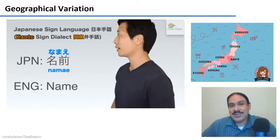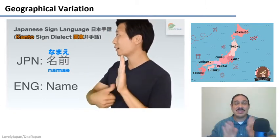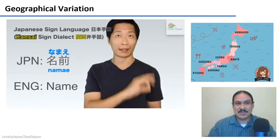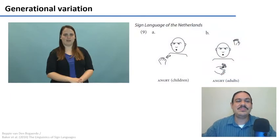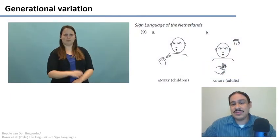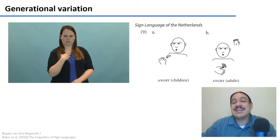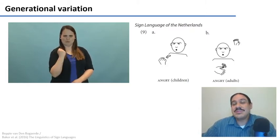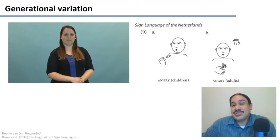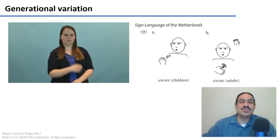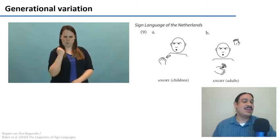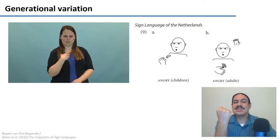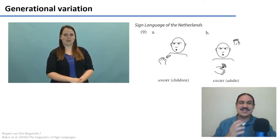You can see that geographical variation and separation of populations is also a source of variation in sign languages. You can also have generational variation. For example, in the Sign Language of the Netherlands there are a few words used exclusively by children as opposed to adults. Here we have 'angry' — the word used mostly by children versus the one used by adults.